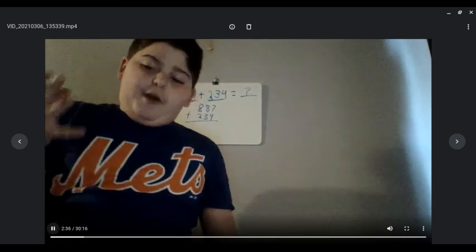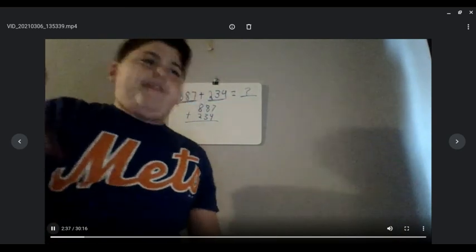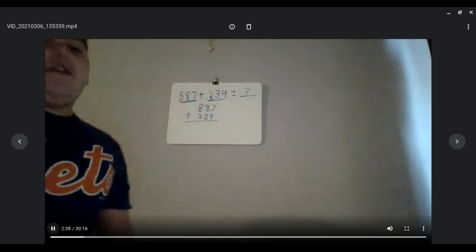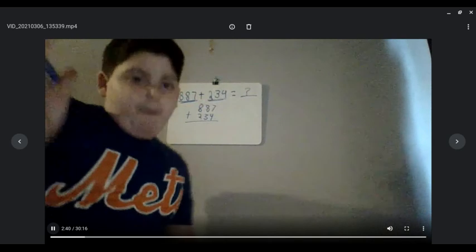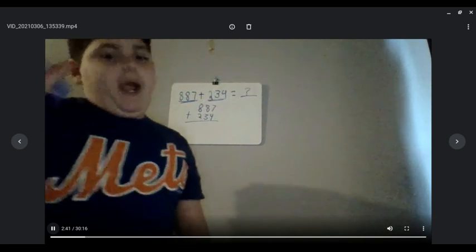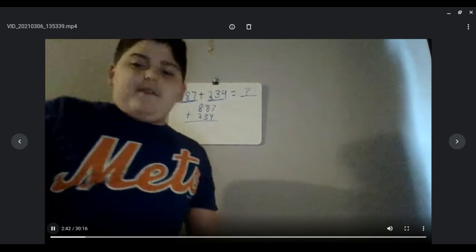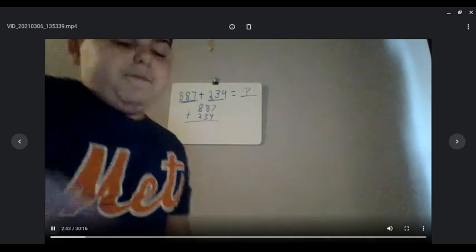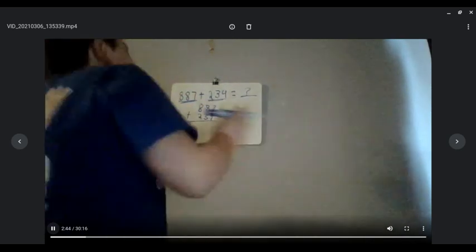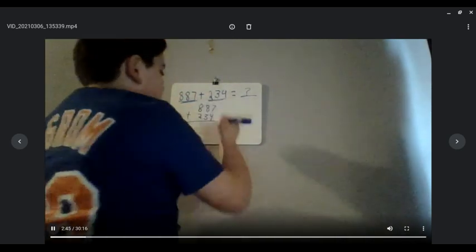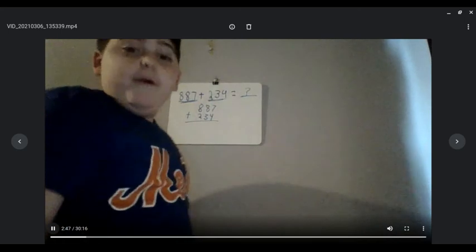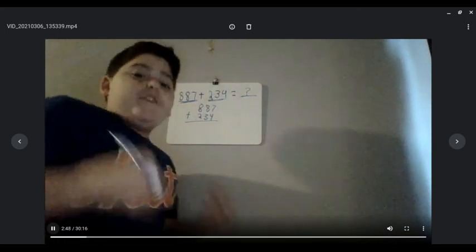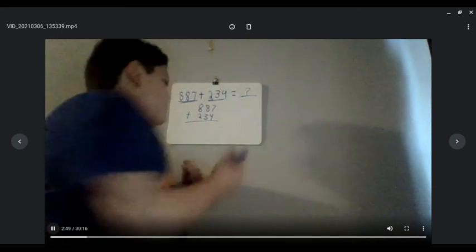If you put the lower number on top, it might get a little difficult if it's subtraction or multiplication. But we're not getting into that right now. So now we're just going to add 7 plus 4, which is 11.